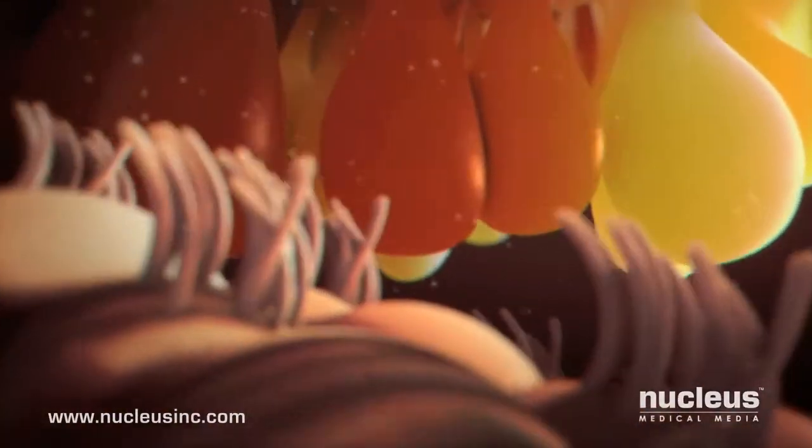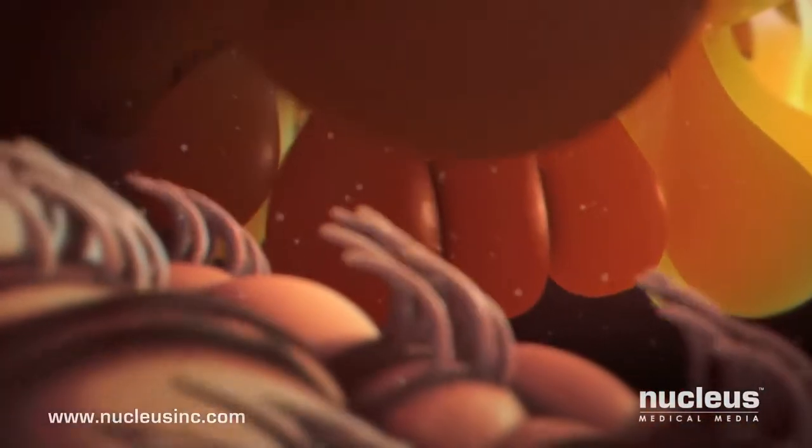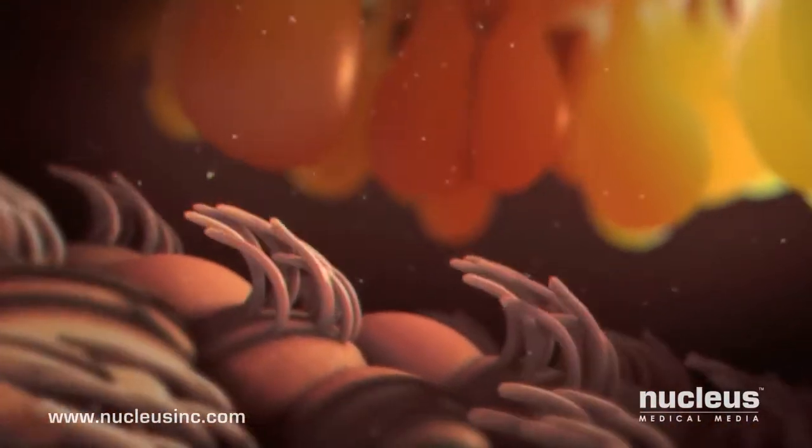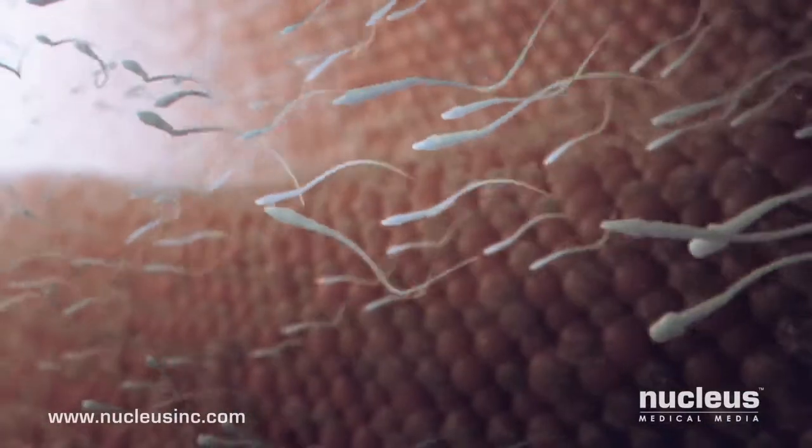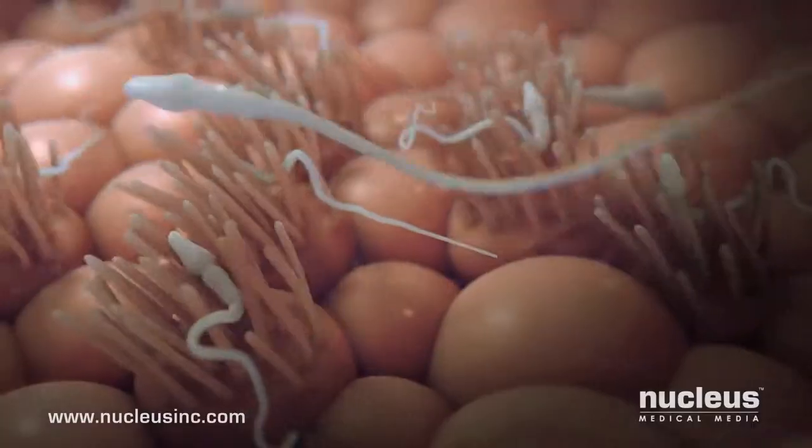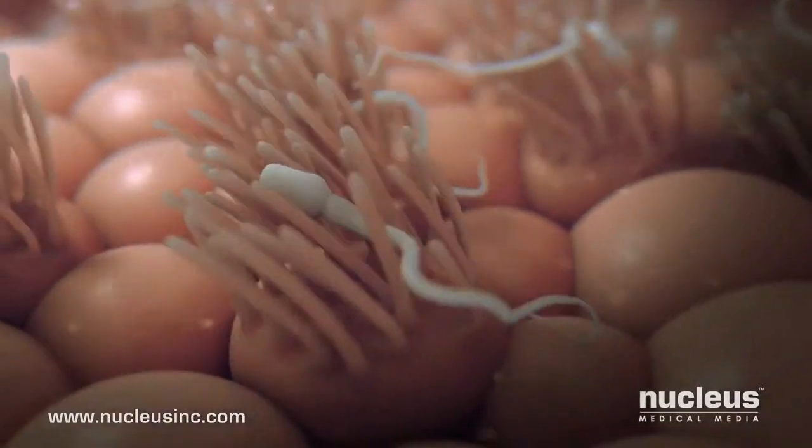Inside the fallopian tube, tiny cilia push the egg toward the uterus. To continue, the sperm must surge against this motion to reach the egg. Some sperm get trapped in the cilia and die.